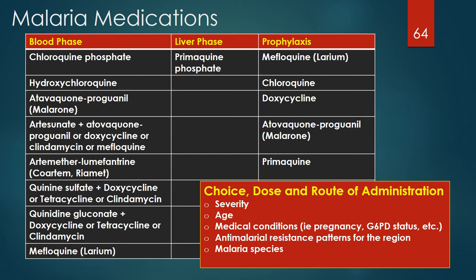The five medications used for prophylaxis include mefloquine, chloroquine, doxycycline, atovaquone-proguanil (Malarone), and primaquine. Choice of medication, dose, and route of administration is dependent on several factors including severity of illness, age, underlying medical conditions such as pregnancy, G6PD status, anti-malarial resistance patterns for the region, and the malaria species being treated.